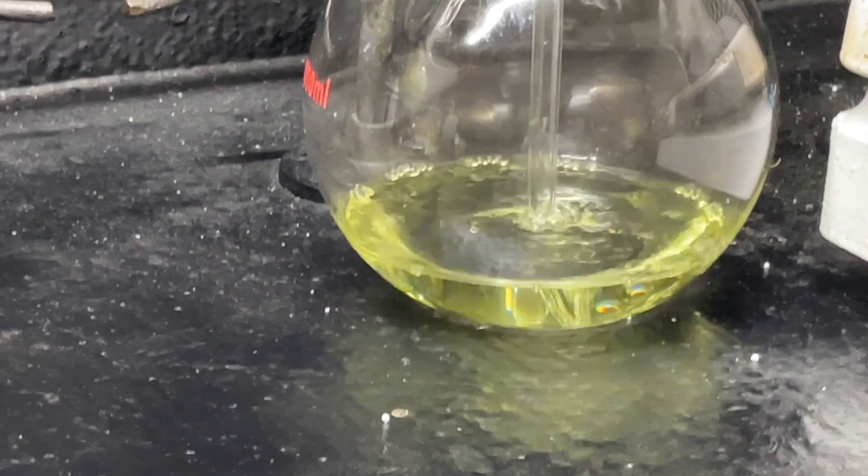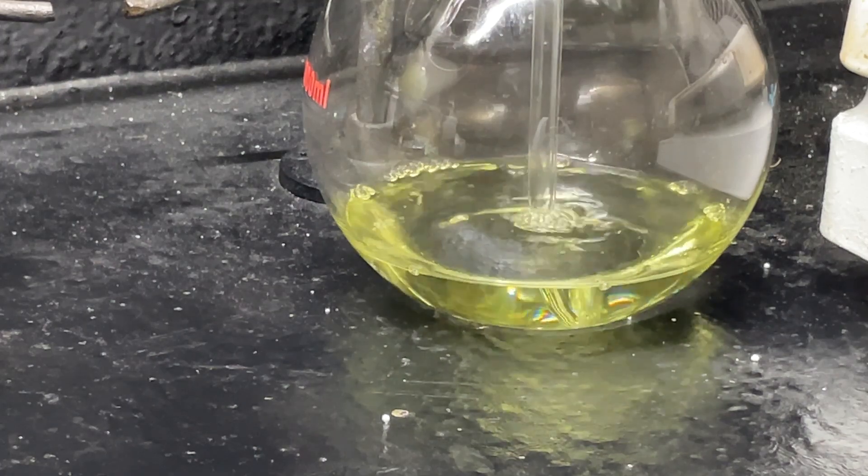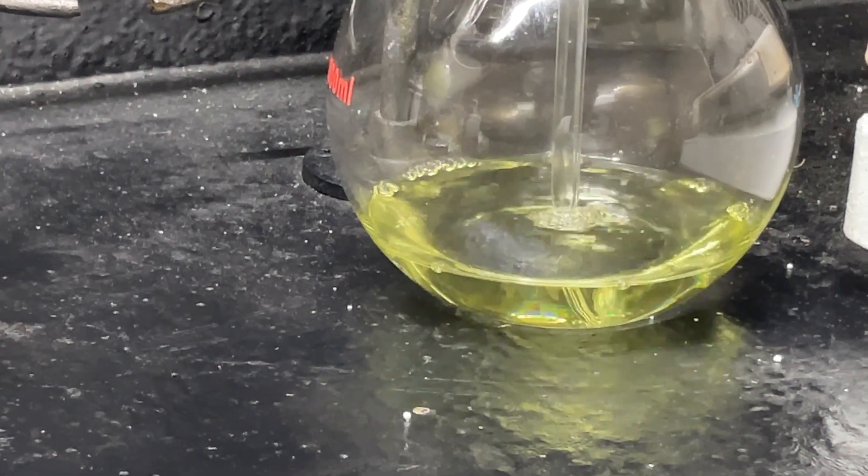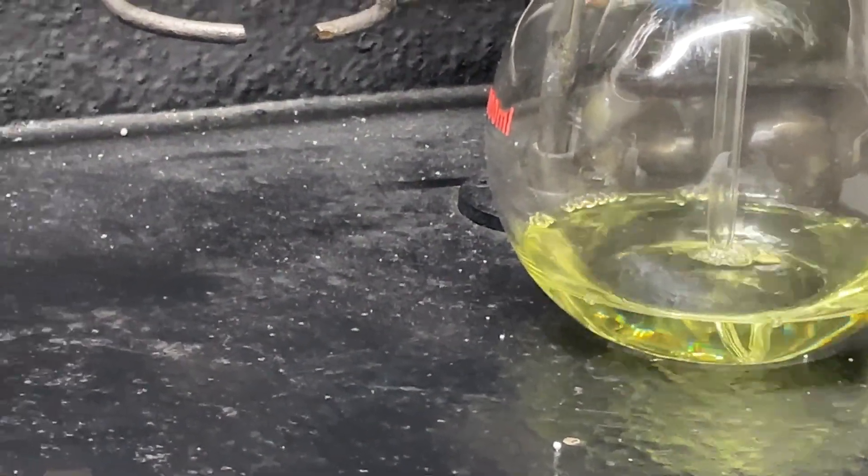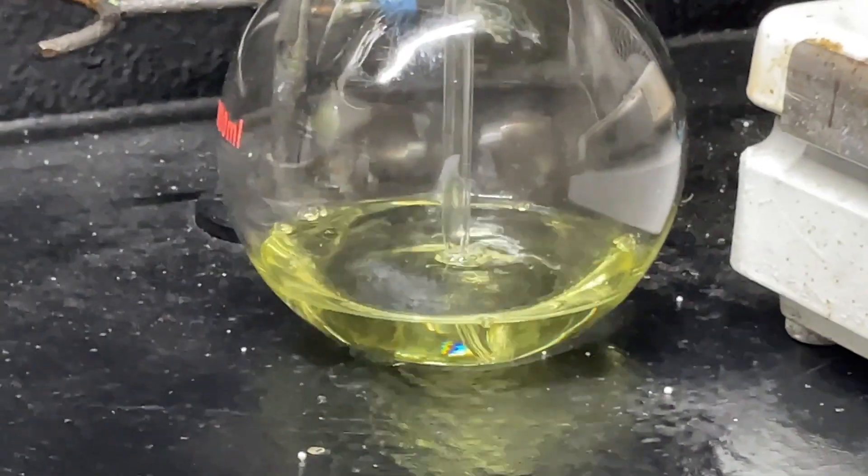Now as you see the solution is starting to turn more yellow which means we're starting to get chlorine gas into the solution, so that is good. And we're pretty much just going to release all of our chlorine here into there and we should get our chloroacetophenone, our active ingredient in mace.